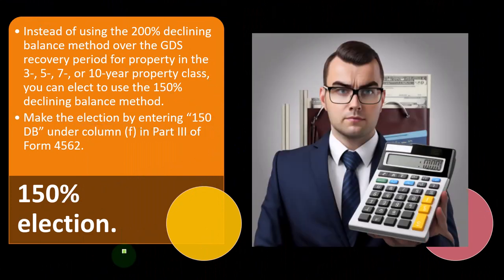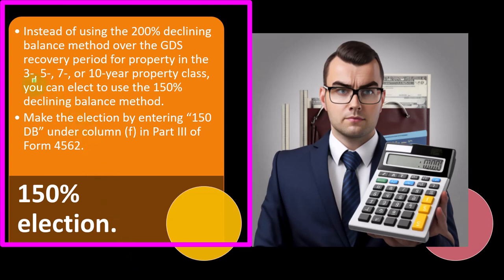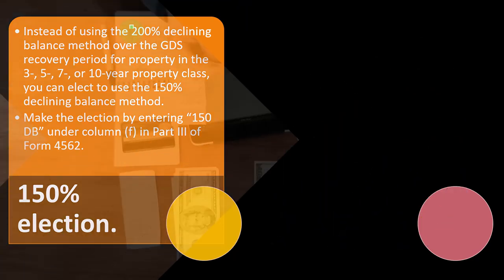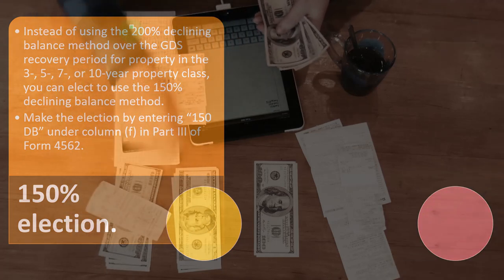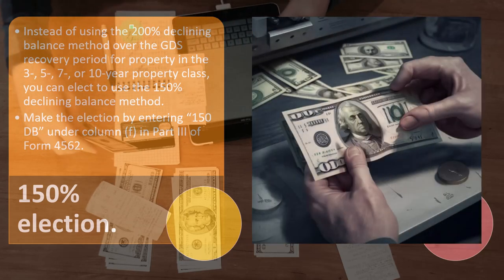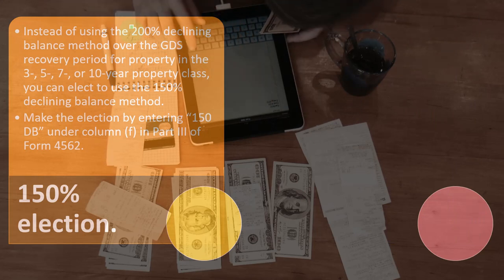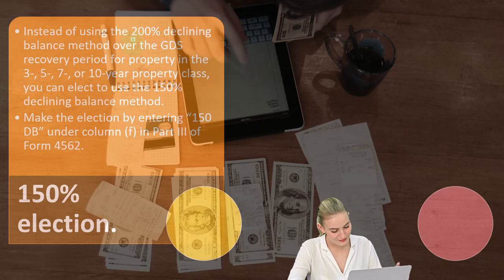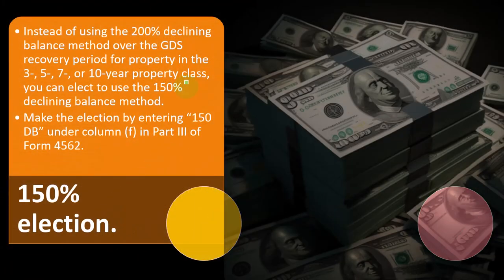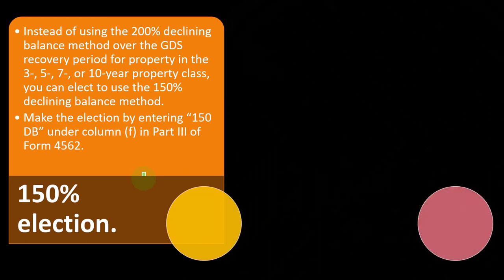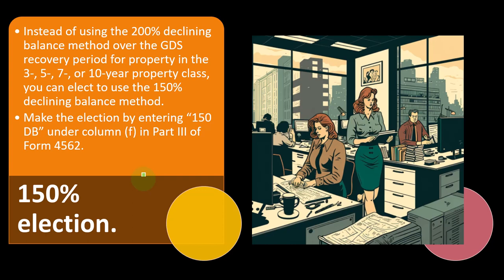The 150% election: instead of using the 200% declining balance method over the GDS recovery period for property in the 3, 5, 7, or 10-year property classes, you can elect to use the 150% declining balance method. Note that 200% DB often provides the biggest up-front benefit, but you might not want it if you only want to deduct up to a certain point and preserve the benefit for future periods — perhaps to stay within a lower tax bracket. Rather than defaulting all the way to straight-line, you have this middle option at 150%, which may suit some cases. Make the election by entering '150 DB' under column F in Part III of Form 4562.